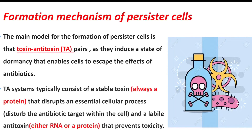Toxin-antitoxin systems typically consist of a stable toxin — always a protein — that disrupts an essential cellular process, meaning it disturbs the antibiotic target within the cell, and a labile antitoxin — either RNA or a protein — that prevents toxicity. When persister cells are exposed to antibiotics, they produce toxin that disturbs the antibiotic target within the cell, while the bacteria also produce antitoxin to protect the cell from the effect of its own toxin. So there is a balance in this mechanism.